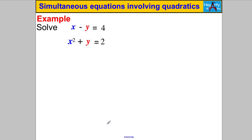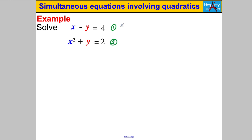Pause the video and see if you can have a go at this one — it's slightly harder. As always, label them equations 1 and 2. The problem here is that neither equation is of the form x equals or y equals, so it's not as straightforward. I have to rearrange one of them to make it either x equals something or y equals something, and then do a substitution. We have loads of options from equation 1: we could add y to both sides and get x equals 4 add y.